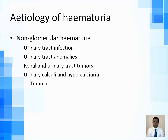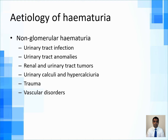Trauma is another important cause of hematuria; you always need to ascertain if there has been a traumatic episode in the region of the kidney or the genitourinary tract. Vascular abnormalities of the urinary tract, like hemangiomas in the bladder, can cause hematuria. Hematological disorders, especially bleeding disorders, can also present with hematuria.